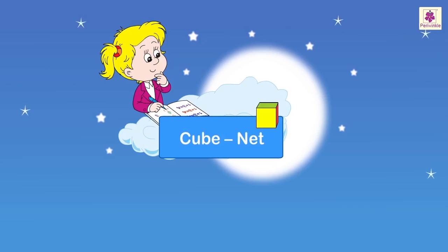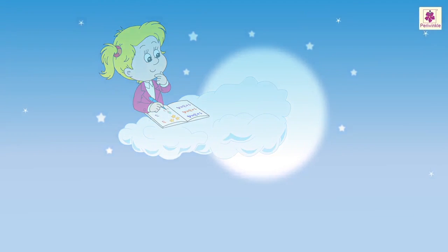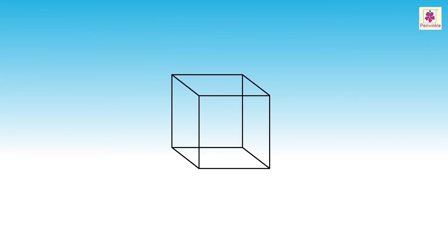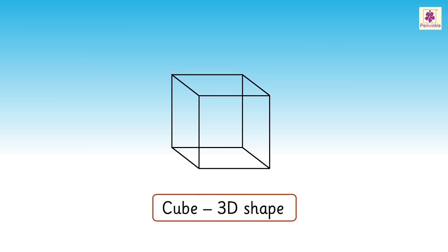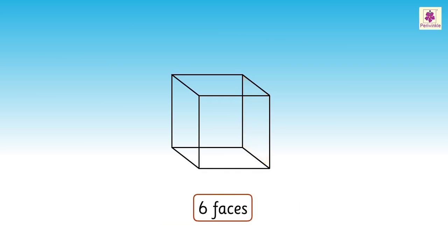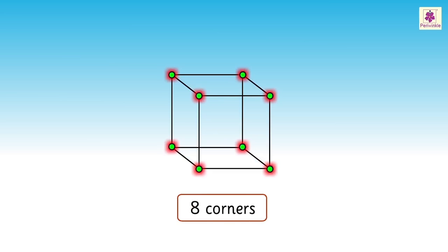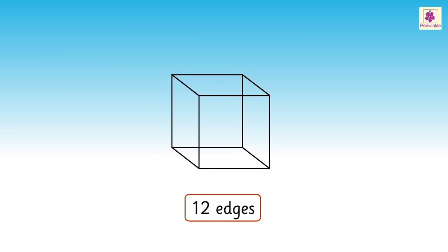CUBENET. Look at this figure. It is a cube. A cube is a 3D shape. It has six faces, eight corners, and twelve edges.